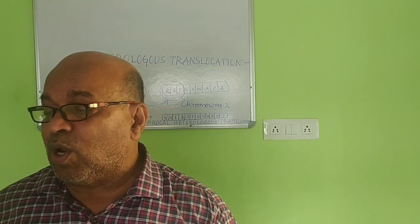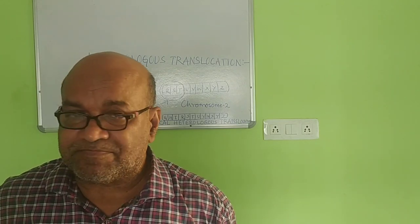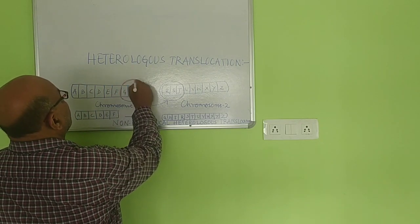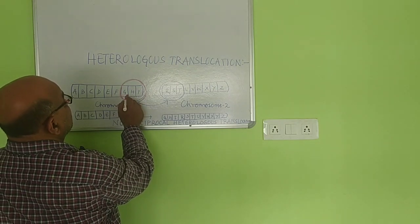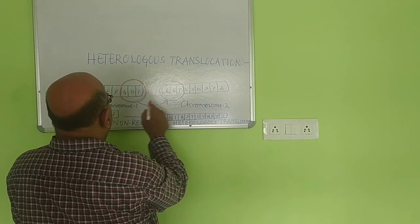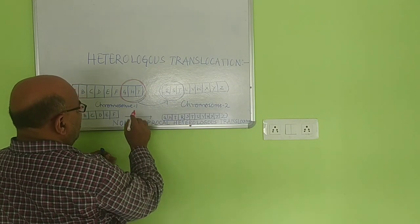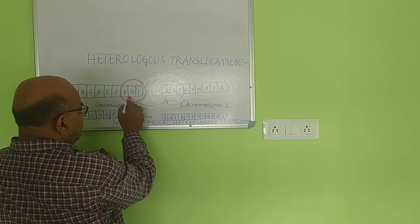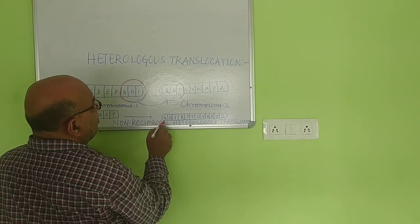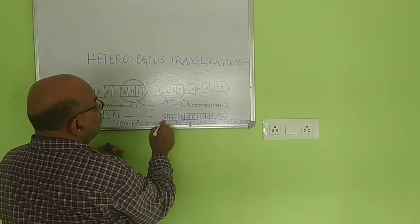In non-reciprocal translocation, there is no exchange between the non-homologous chromosomes; only a shift from one linkage group to the other linkage group takes place. The portion of chromosome 1 comprising genes G, H, I as a segment is shifted towards chromosome 2. Chromosome 2 is not equivalent to chromosome 1 in structure, set, or size.